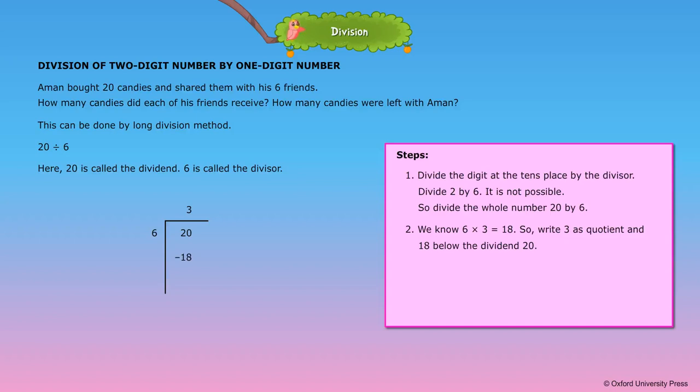3. Subtract 18 from 20 and write the remainder. 4. We get quotient is equal to 3 and remainder is equal to 2.